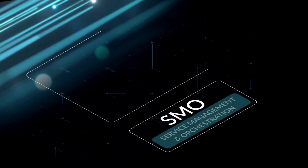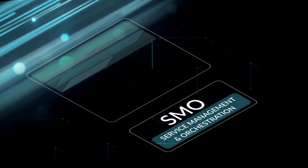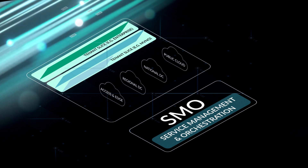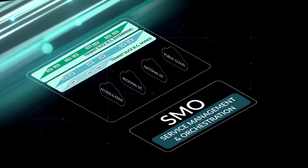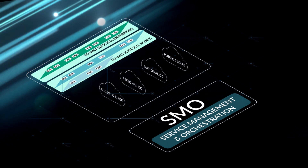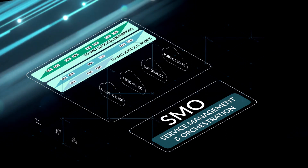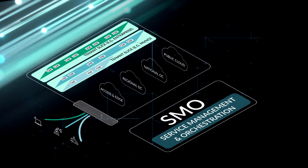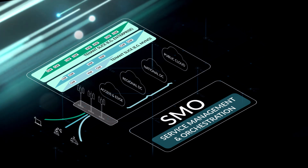Juniper's RIC is an integral part of its SMO, a multi-tenant, multi-cloud and multi-domain service management and orchestration platform that delivers end-to-end network slicing.